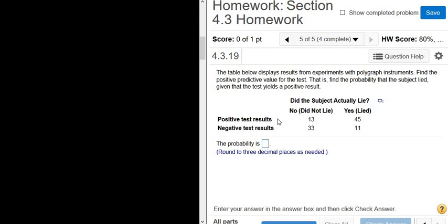Positive means that the test is saying that the person lied. And negative means the test is saying the person did not lie. For example, here it says positive, and here it says no. So there's 13 people who did not lie, but the test called them liars. So these people were falsely accused of being liars.